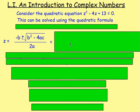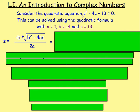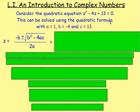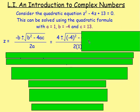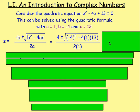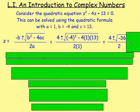So the quadratic formula from your National 5: z = (−b ± √(b² − 4ac)) / 2a. You get the values of a, b, and c from your coefficients. We've got a = 1, b = −4, and c = 13. Substituting into the quadratic formula, you would end up getting (4 ± √(−36)) / 2.